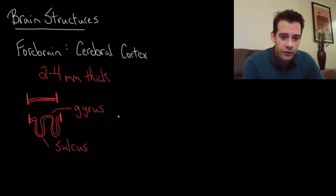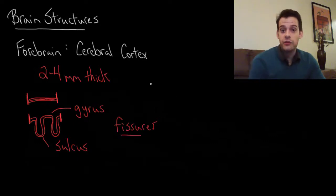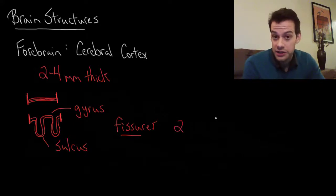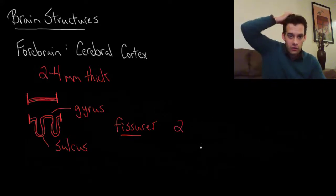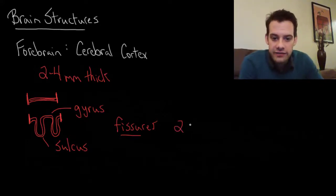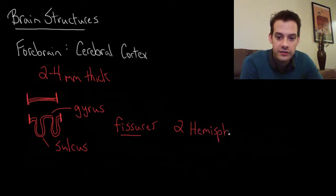We also have larger folds in the brain and these are fissures. A fissure is a larger fold in the brain. That's really the only difference between a fissure and a sulcus, is just that a fissure is larger. The fissures divide the brain up into regions. The largest division that we have and the largest fissure runs all the way across the top of the brain. This divides the brain or divides the cortex into these two hemispheres.